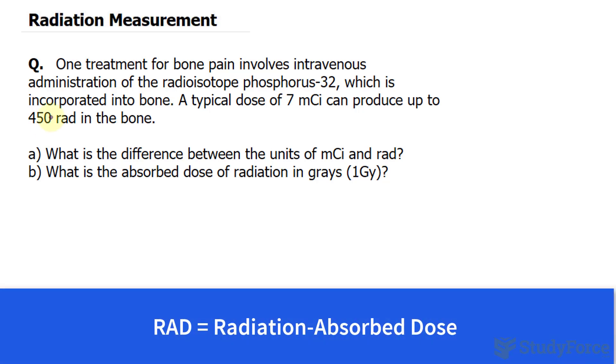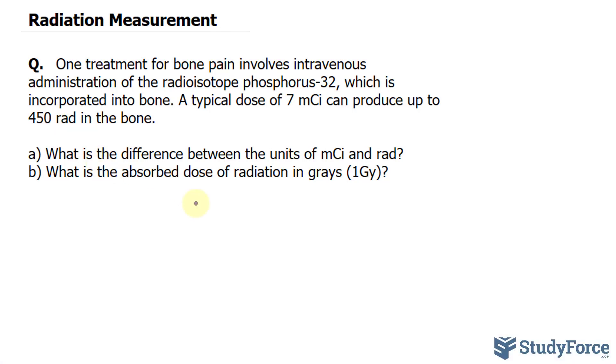We'll discuss what this is in a moment. Now, what is the difference between the units of millicuries and rad? In case you don't know, the rad is a unit of absorbed radiation dose, and it's defined as this: one rad is equal to 0.01 grays.